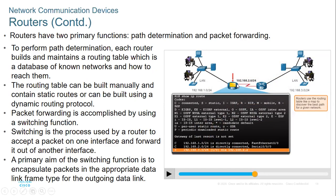Routers are chatty — they exchange information about what they know. A PC doesn't know how to reach a remote network, but router two will share its routes with router one. That's how a PC can reach another PC. Routers keep this information in the routing table. On the router, to see the routing table, you go to privileged mode and run the command 'show IP route'.